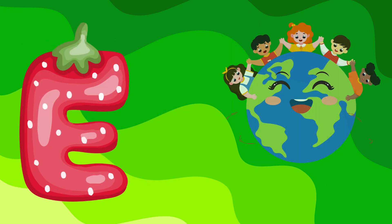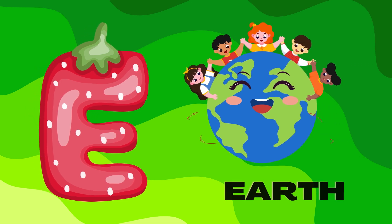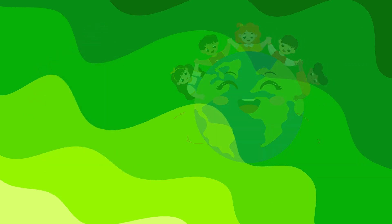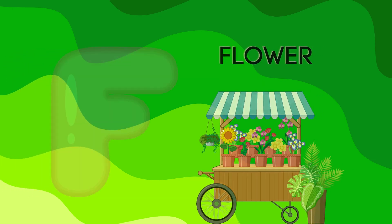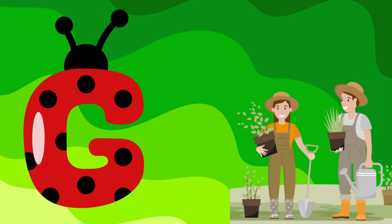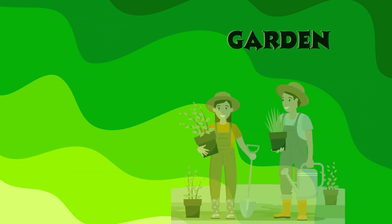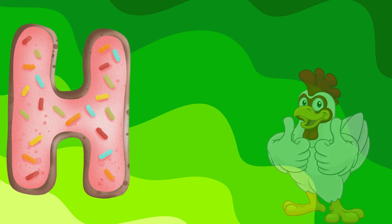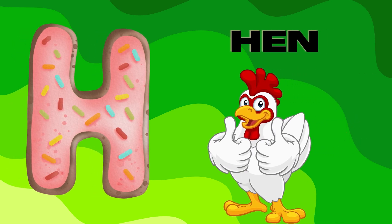E. E is for earth. F. F is for flower. G. G is for garden. H. H is for head.